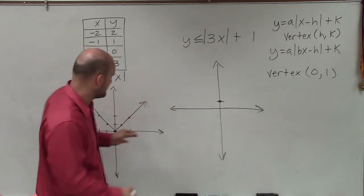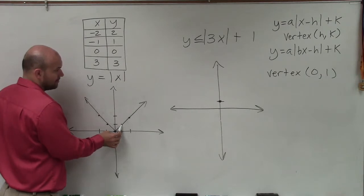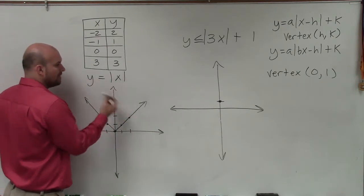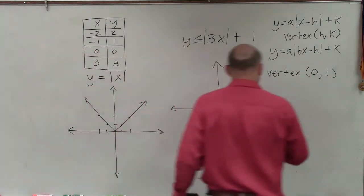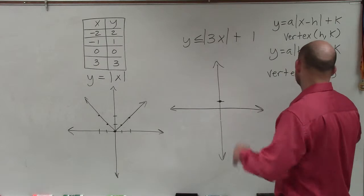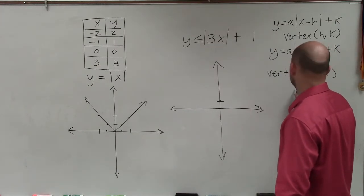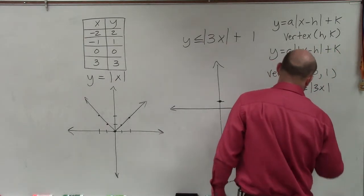And the way that I'm going to graph this, if you notice, the graph goes over 1, up 1, right? But that's for x. Well, what about then if I did a table for 3x or absolute value of 3x? So what that's going to do is if I take that same equation, and let's just look at the function y equals absolute value of 3x. So if I did an xy table...